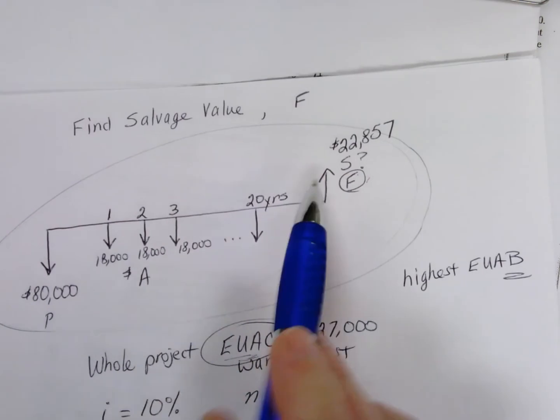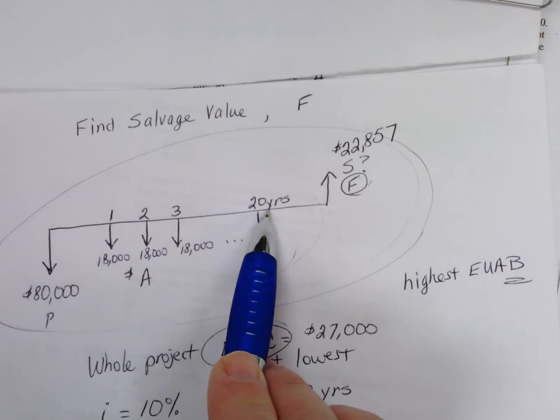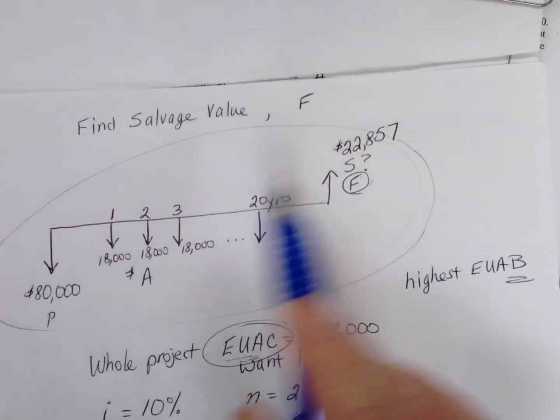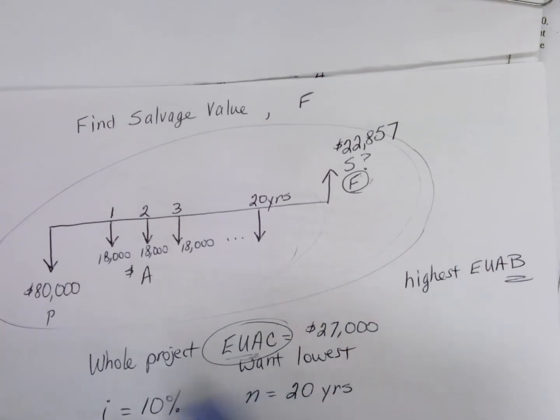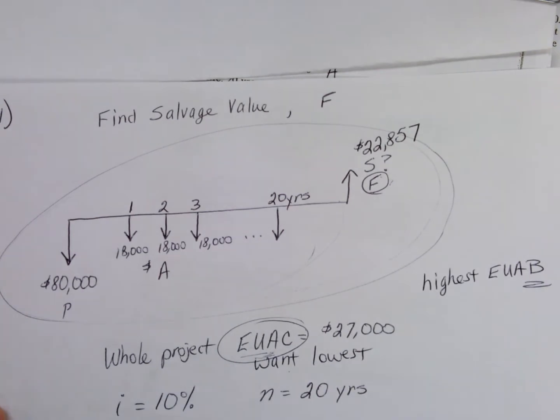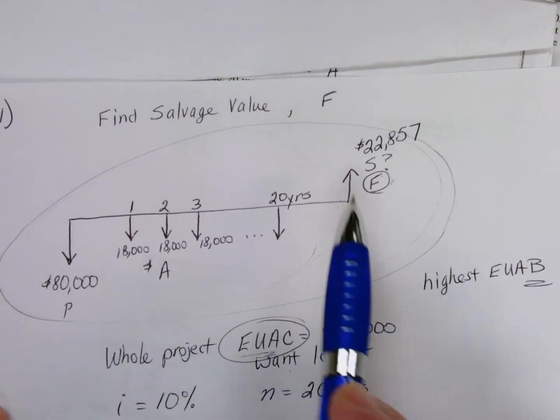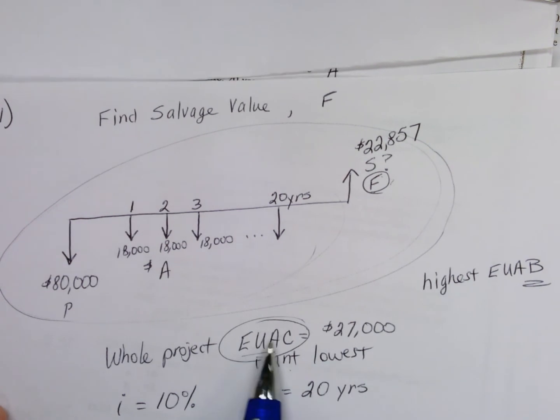And if they're different sizes of initial investments or different sizes of cash flows or even a different length of time, we can take both of them and translate them into an average annual cost or benefit and then compare the two and pick the best one—the lowest cost or the highest benefit. So it's very useful in analyzing several machines, one or more machines that can do the same job, in finding the one that makes the most financial sense when you put them all on average, average annual costs or benefits.